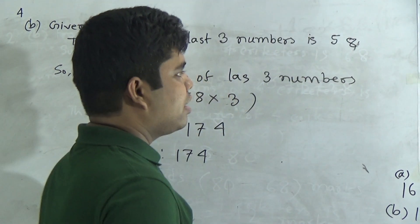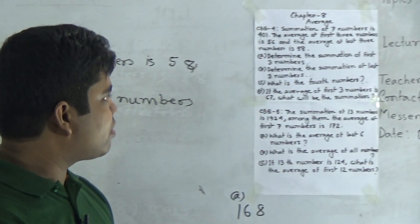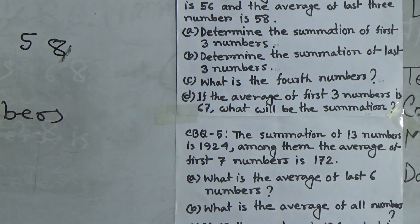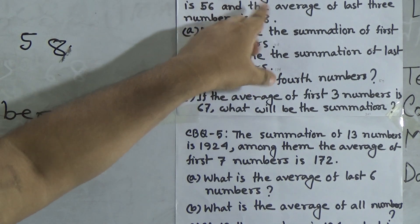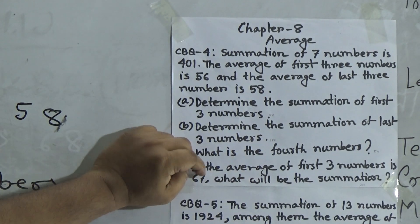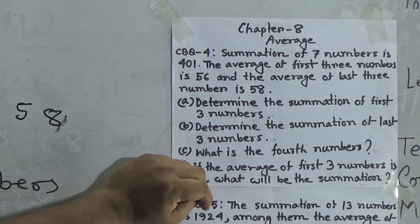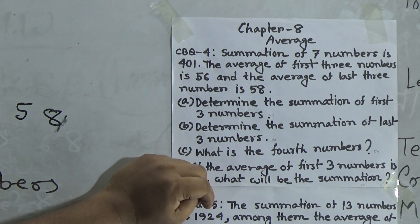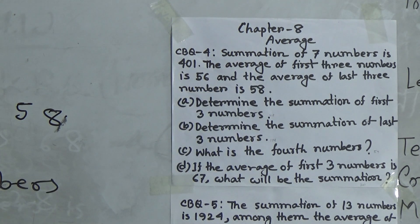Now dear student, this is question C: what is the fourth number? In order to solve this, at first we go to the stem. Notice the summation of seven numbers is 401. The summation of the first three numbers was obtained in question A, and the summation of the last three numbers was obtained in question B. So we add the summation of the first three numbers and the last three numbers, then subtract that result from the summation of the seven numbers to get the fourth number. I hope you have understood.